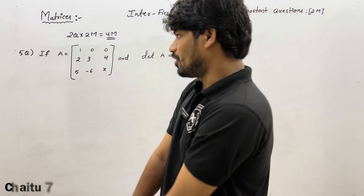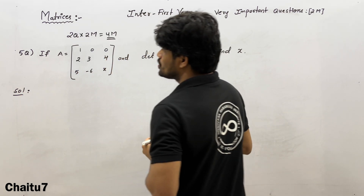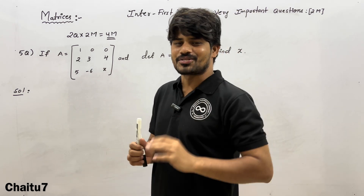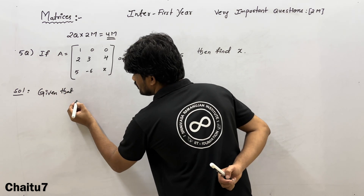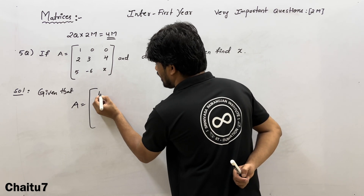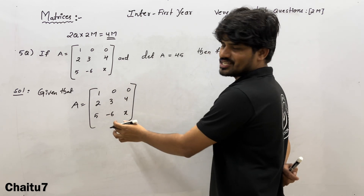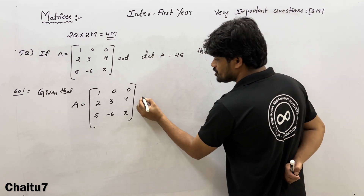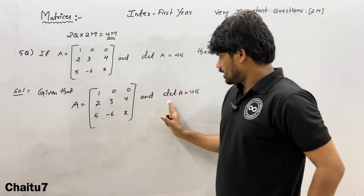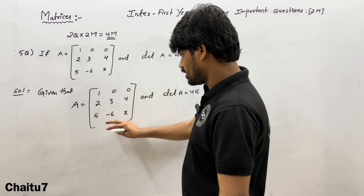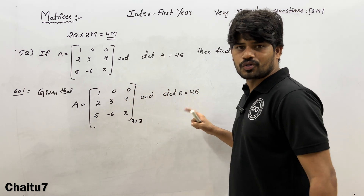Now we are going to the 5th question, also important. Given matrix A = [1, 0, 0; 2, 3, 4; 5, −6, x] and det(A) = 45, find the value of x. The order is 3×3. We need to find the determinant equal to 45 and solve for x.